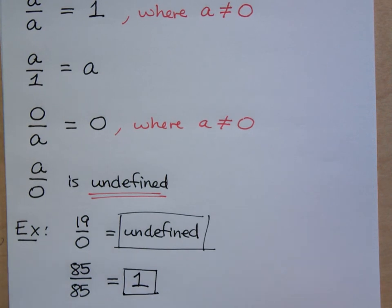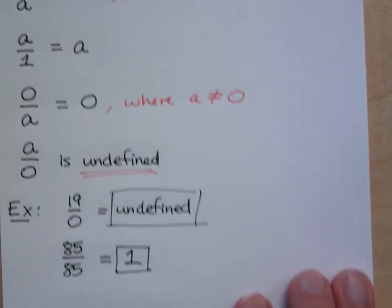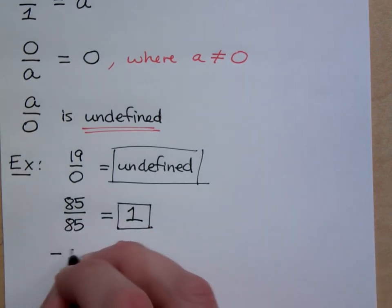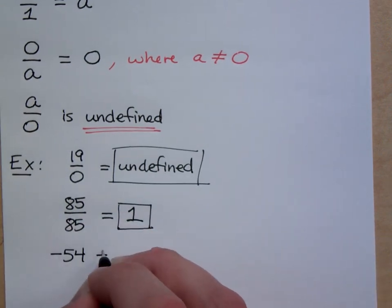85 divided by 85, you get one. A number divided by itself is one. How many times does 85 go into 85? One time, see you got it. What if I were to say negative 54 divided by one?